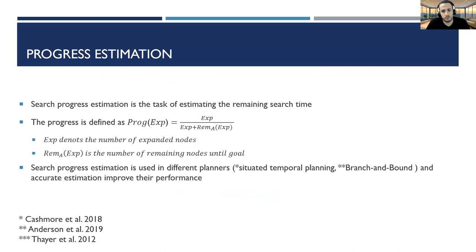First let's define what is search progress. Search progress estimation is the task of estimating the remaining search time. Progress is defined as Prog(Exp) equals Exp divided by Expansion(Exp). Exp denotes the number of expanded nodes and Rem(Exp) is the number of remaining nodes until goal.